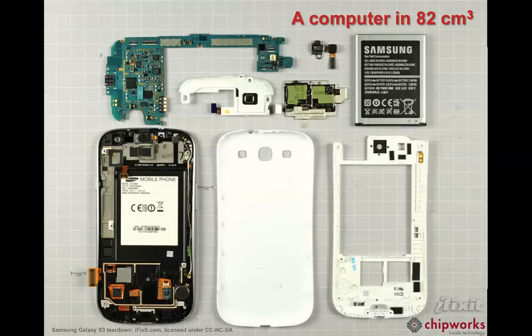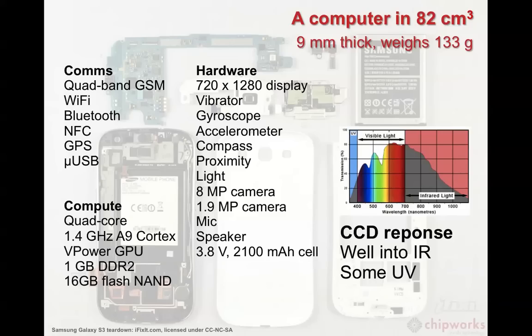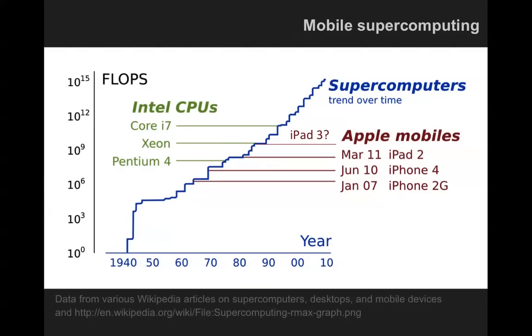But when you look inside these things, they're so powerful now. Packed into this 82 cubic centimeters, that's 24 times smaller than my laptop. There's all sorts of goodies: quad-core 1.4 gigahertz processor with a gig of RAM, lots of storage, loads of different sensors, accelerometer, gyroscope, and so on. Even the cameras are sensitive to infrared light, like most digital cameras, so they do have sort of superhuman capabilities. And of course, the compute is superhuman as well.